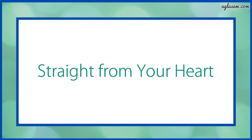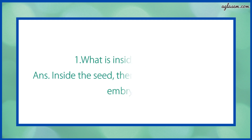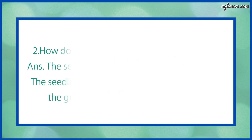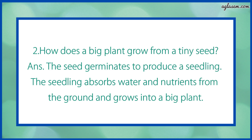Now, straight from your heart. Question number 1 says: what is inside the seed? Answer: inside the seed there are cotyledons and embryos. Second question says: how does a big plant grow from a tiny seed? Answer: the seed germinates to produce a seedling. The seedling absorbs water and nutrients from the ground and grows into a big plant.